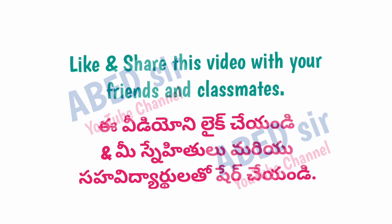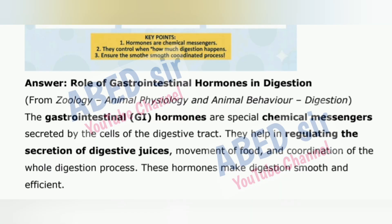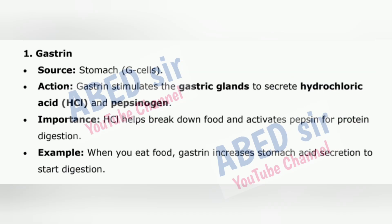Next important long question: Explain the role of gastrointestinal hormones in digestion. The gastrointestinal (GI) hormones are special chemical messengers secreted by the cells of the digestive tract. They help in regulating the secretion of digestive juices, movement of food, and coordination of the whole digestion process, making digestion smooth and efficient. 1. Gastrin — Source: stomach G-cells. Action: Gastrin stimulates the gastric glands to secrete hydrochloric acid (HCl) and pepsinogen. HCl helps break down food and activates pepsin for protein digestion. Example: when you eat food, gastrin increases stomach acid secretion to start digestion.